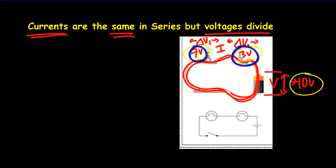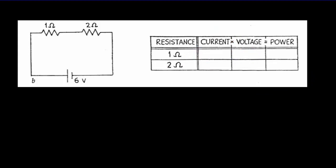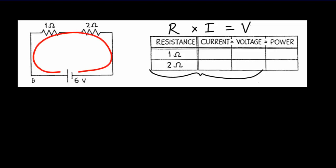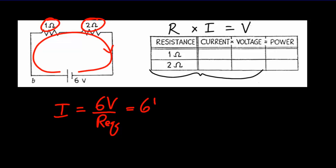Here's an example that involves RIV tables. RIV tables are useful devices for helping you organize your thinking. We've got resistance times current, which by Ohm's law equals voltage - so out of those first three columns, if I know any two of them I can always find the third. The current has to be the same throughout this circuit, and the value of that current equals the battery voltage of 6 volts divided by the equivalent resistance of the circuit. The equivalent resistance will be 1 plus 2, or 3 ohms, so we get a current of 2 amperes throughout.